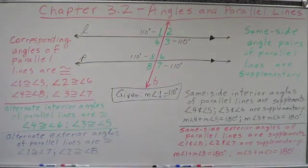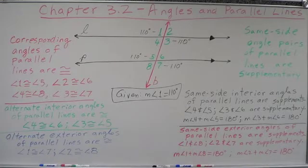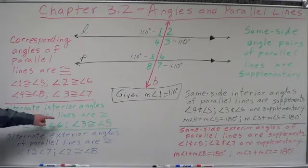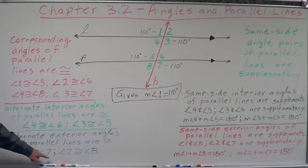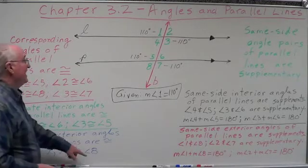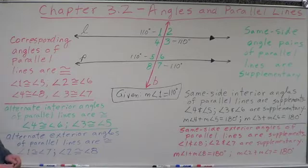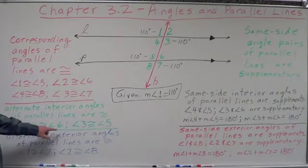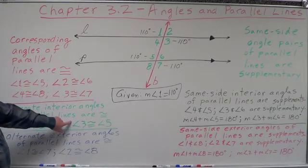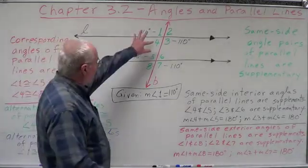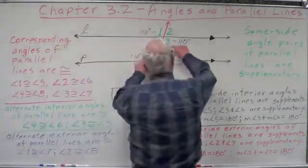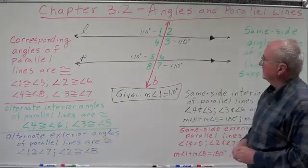Now let's see what else we can do. Alternate interior angles of parallel lines are congruent. So we could have done angles 1 and 7, and angles 2 and 8. Alternate interior pairs: 3 and 5. We could get it there either by vertical angles or by alternate interior pairs.